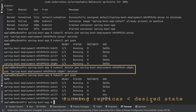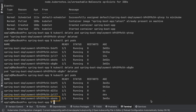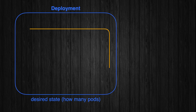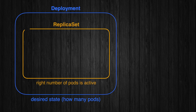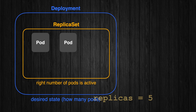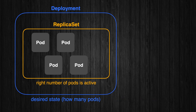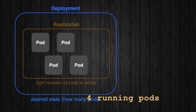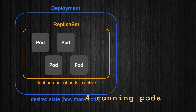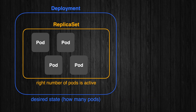To maintain the desired state, it automatically creates a new pod to replace the one you deleted. This is how Kubernetes works in this case: you set the deployment to have five replicas — that's the desired state. When you delete a pod, Kubernetes sees that only four pods are running — that's the current state.